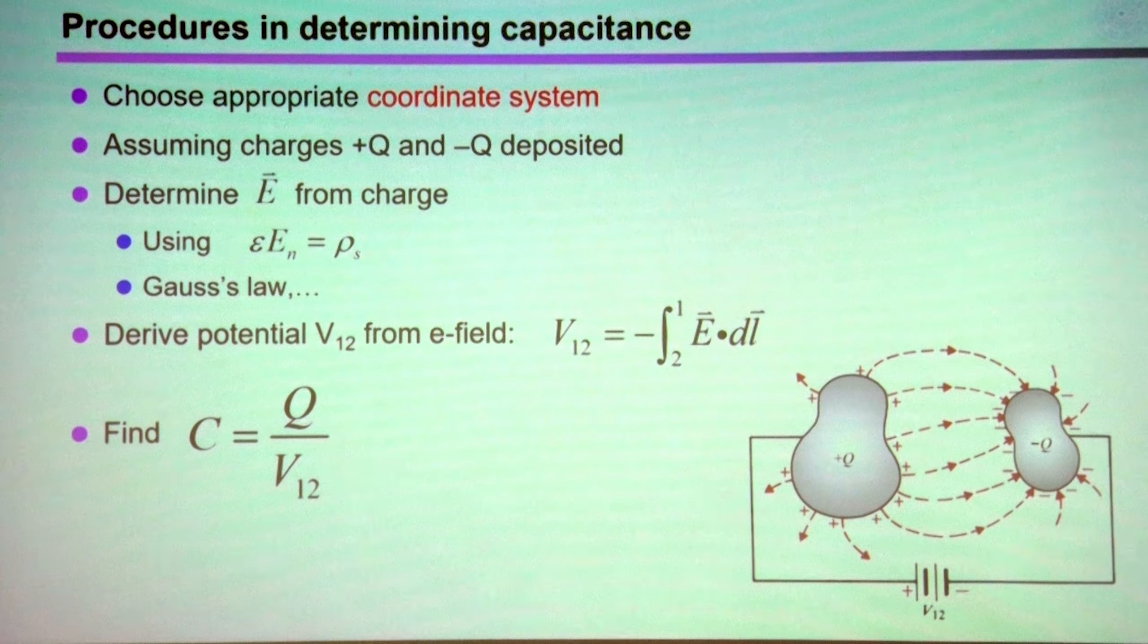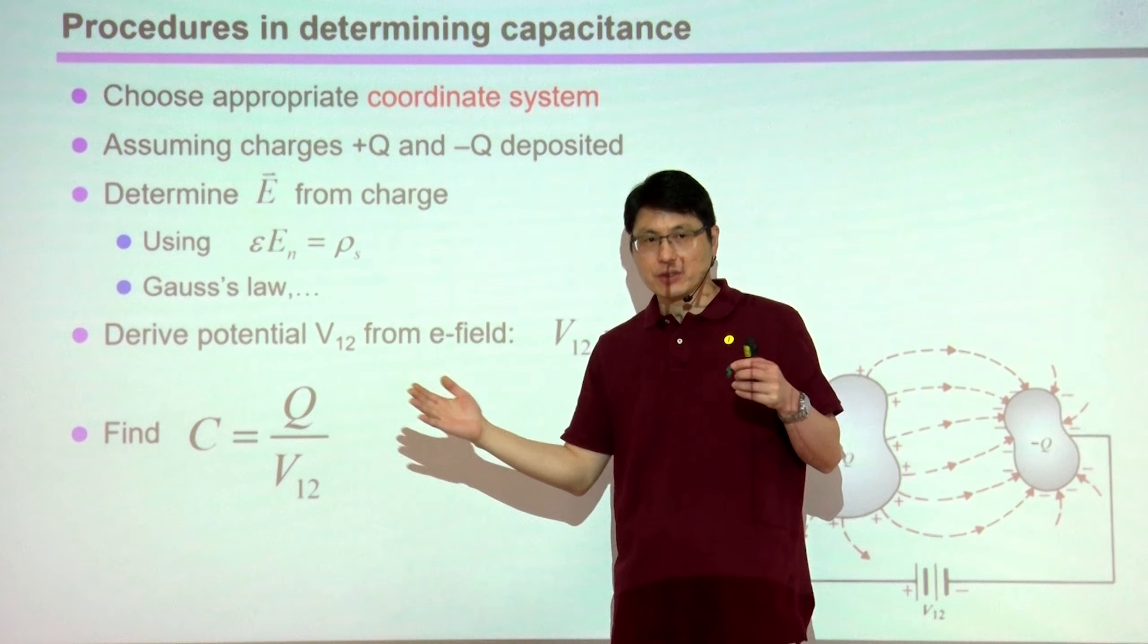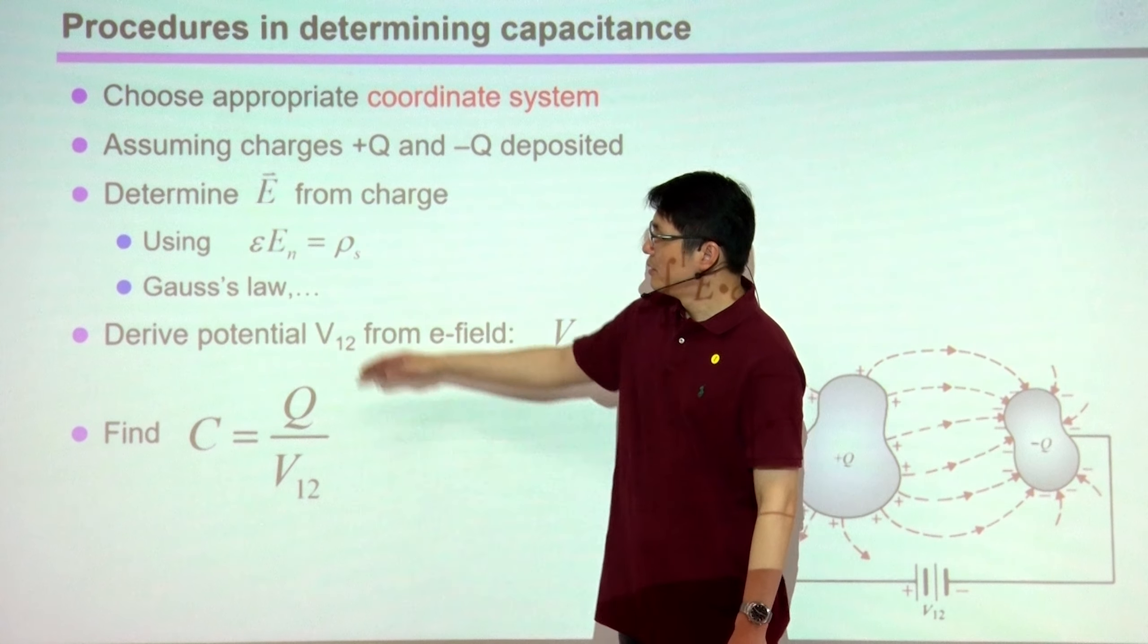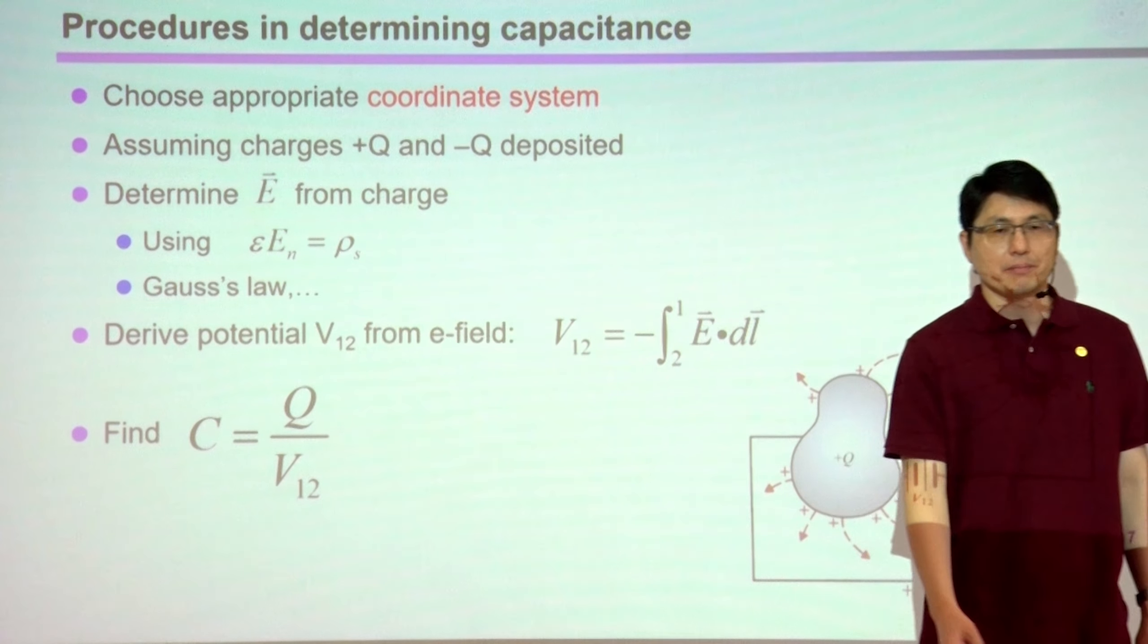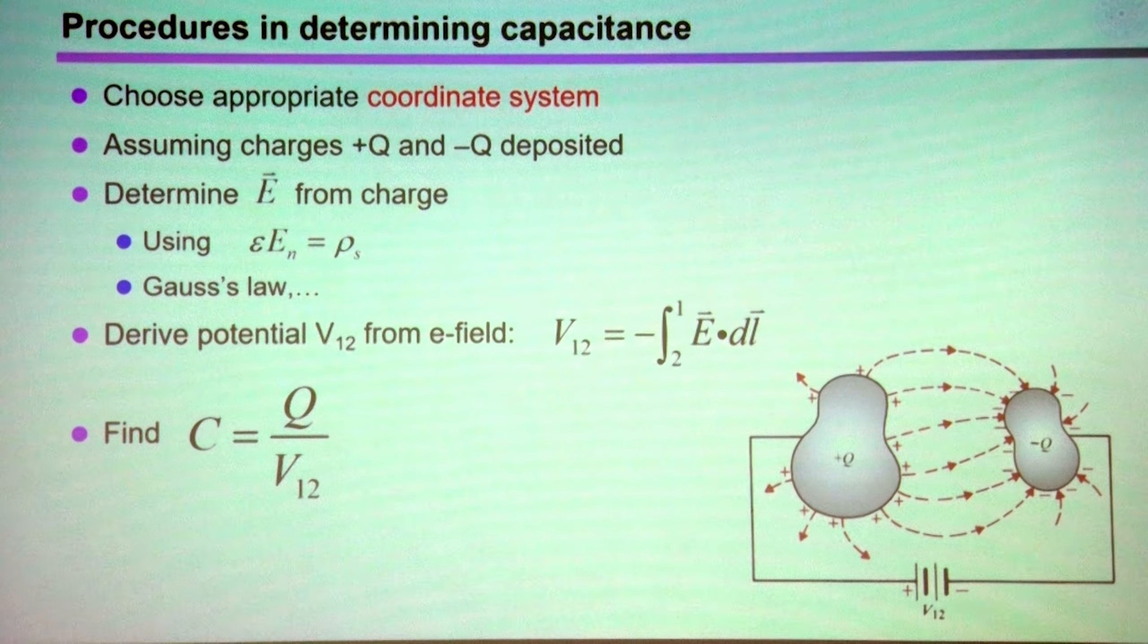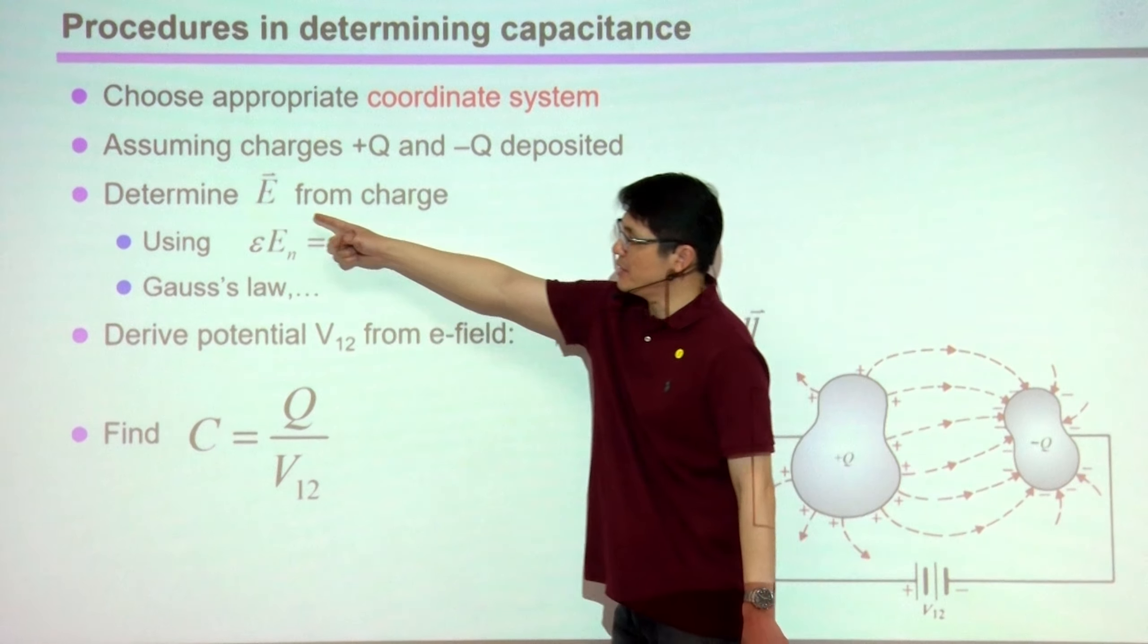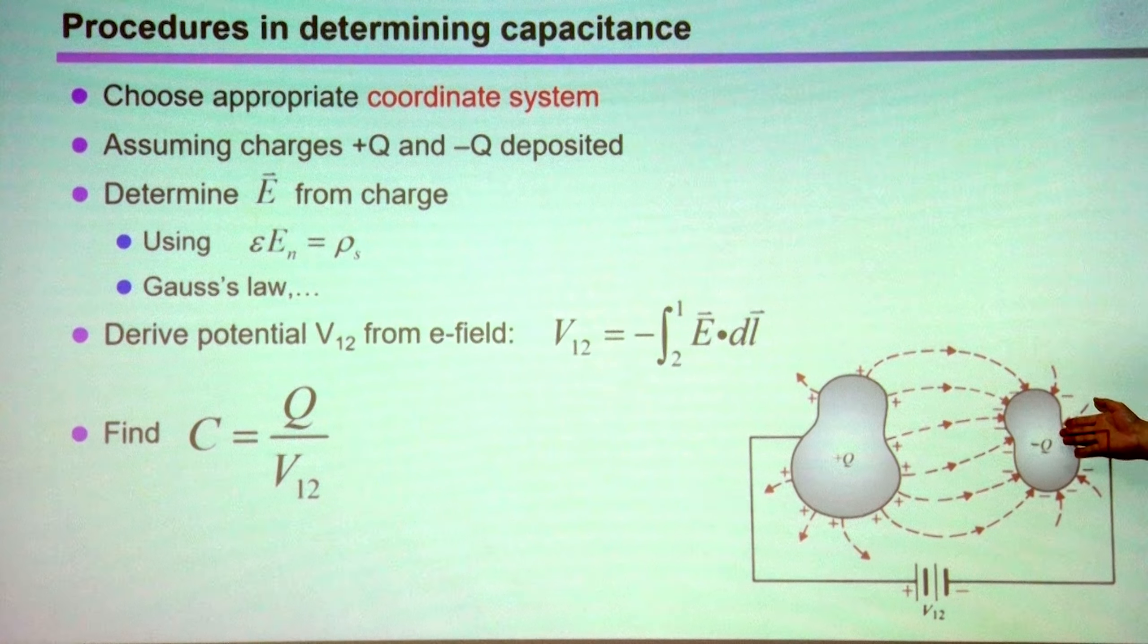Once we assume there are charges over the conductors, we can calculate the resulting E-field intensity distribution. Gauss's law is probably most appealing, but if you cannot do it, you can just use Coulomb's law. Once we know the E-field intensity, we perform the negative line integration to find the potential difference between the higher end to the lower end.